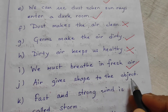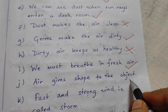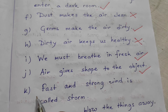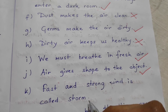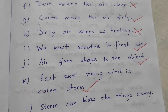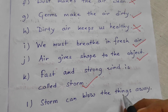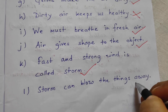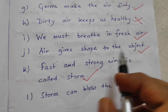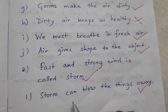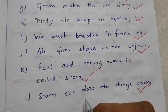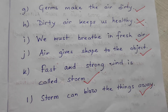Number J: Air gives shape to objects? Correct. Number K: Fast and strong wind is called storm? Yes. Storm can blow things away? It is also correct. So today up to this much — you will do it in your copy. Thank you.